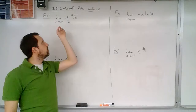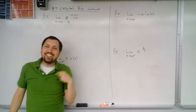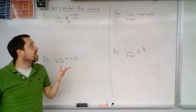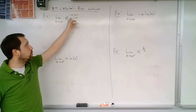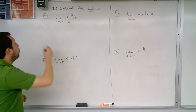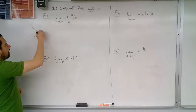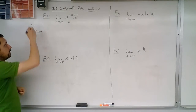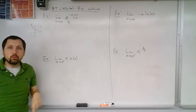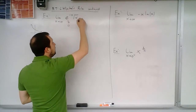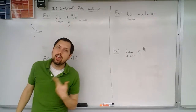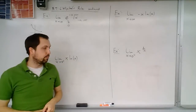When x goes to infinity, e to the negative x is going to zero. If we think about what e to the negative x looks like, it looks like this function here — x goes to infinity, this goes to zero. But the square root of x piece is going to go to infinity. So we have zero times infinity, and that's one of our indeterminate forms.